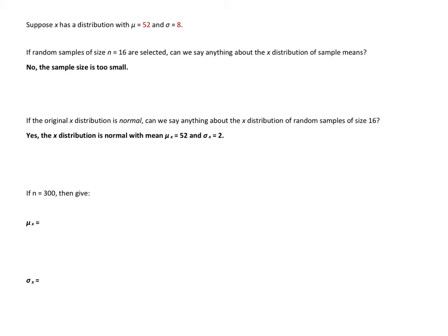Suppose x has a distribution with population mean 52 and population standard deviation of 8. If random samples of size 16 are selected, can we say anything about the x̄ distribution of sample means? We cannot; the sample size is too small. However, if the original x distribution is normal and we know it upfront, can we say anything about the x̄ distribution of random samples of size 16? In this case, yes, the x̄ distribution will be normal.